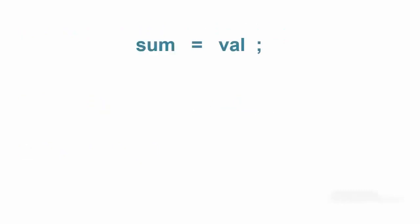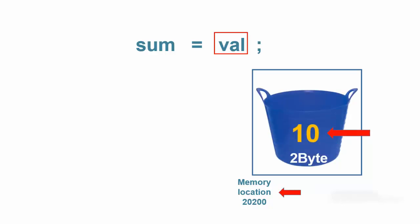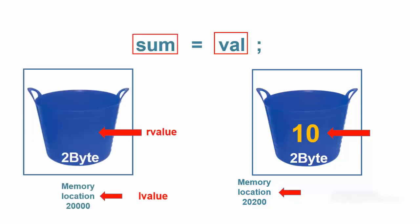In the last statement, the compiler goes to the symbol table and finds the L value for variable val. It then uses the memory address or val's L value to fetch val's 2 byte bucket. Note that both operands are available. The assignment operator causes the compiler to pour the contents of val's bucket into sum's bucket.